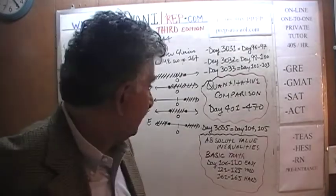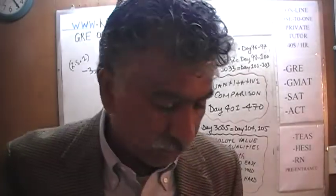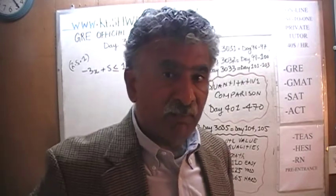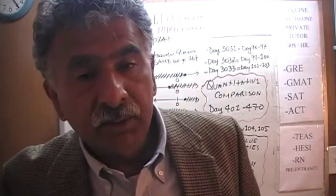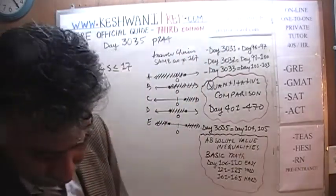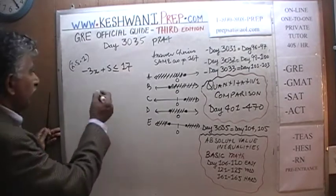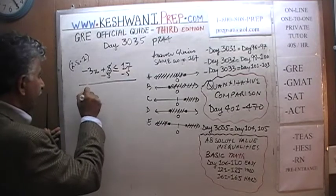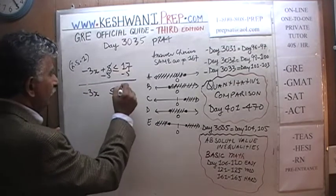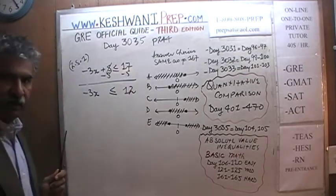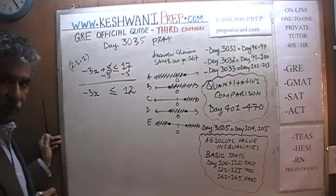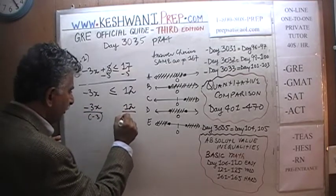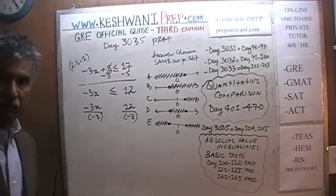Turn to page 167 — those are the five answer choices we're dealing with. Given this inequality, what can we do? Let's find out. It's very simple, very straightforward. We're going to subtract 5 from both sides to get rid of the 5. Negative 3x is less than or equal to 17 minus 5, which is 12. And this is where it gets tricky — we want to get rid of the negative 3, so we need to divide both sides by negative 3. This is where a lot of people end up making mistakes.